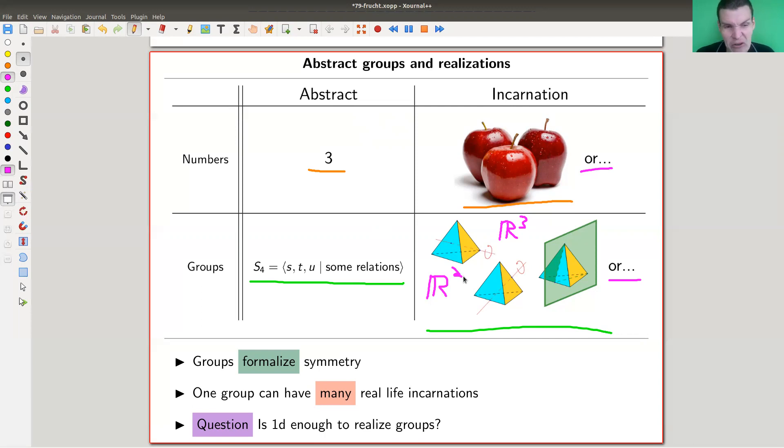But certainly it's not one dimensional. And somehow a good question is, can you realize every group as a one dimensional object? Groups can get fairly complicated. Zero dimensions are not enough. I will come back to points in a second. So that's easy to see. But one dimension, it's absolutely not clear. And Frucht's theorem answers this question positively. So actually one dimension is enough.